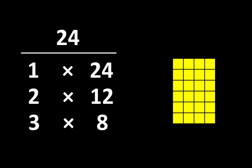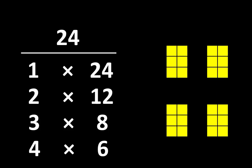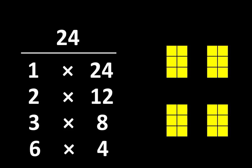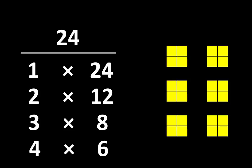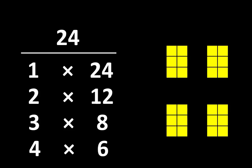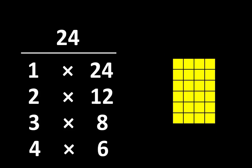We can also break 24 apart into 4 groups of 6. Here is one way to show 4 groups of 6. And we know that if we can make 4 groups of 6, then we can also make 6 groups of 4. So we can think of it both ways — we can move them back to 4 groups of 6, and we know that the total is still 24.